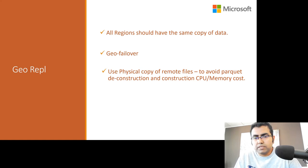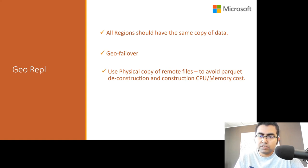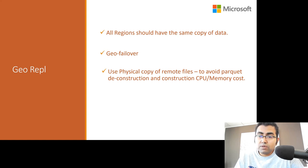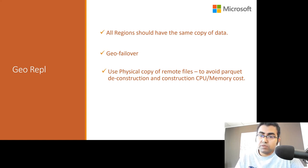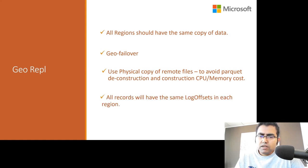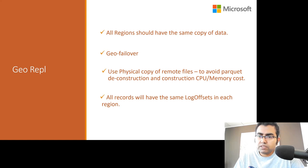For geo-replication seeding, if a customer has one petabyte of data in one region and chooses to add another region, doing record-level replication and reconstructing Parquet on the other side is expensive in CPU and memory. So we do a physical copy of files and interleave it with logical replication of steady-state data to seed the new region. When configuring geo-replication, all records have the same log offset in each region, though they physically point to different files in each region since we don't share data across regions.